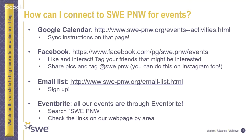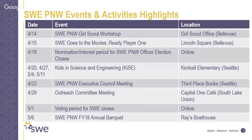Coming up next is a look forward at what we've got going on with our events in April and a little bit of a tease into May. We have a few outreach events scheduled for this month and we're still looking for volunteers for all of those. We have a Girl Scout workshop in Bellevue and our regular Kids in Science and Engineering program, which takes place Friday afternoons at Kimball Elementary. We're also having a movie event as part of our book club — last month's book was Ready Player One, and we're following up with a SWE Goes to the Movies event to see the Ready Player One movie.